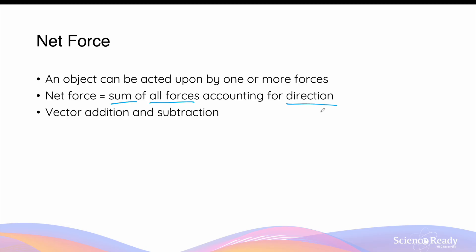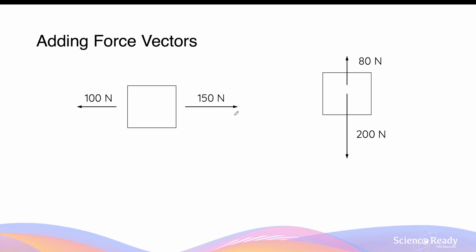Remember that forces are not simply magnitudes of newtons — they also include the direction. In order to calculate net forces, we need to employ skills of vector addition and also subtraction. Here we have two examples of forces acting on a mass. In the first example on the left-hand side, we have a 100N force acting towards the left and a 150N force acting towards the right. Since the two force vectors are already in the same horizontal direction, we can use vector addition to find the net force straight away.